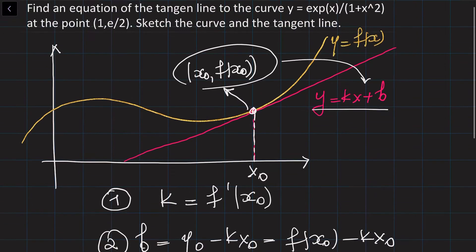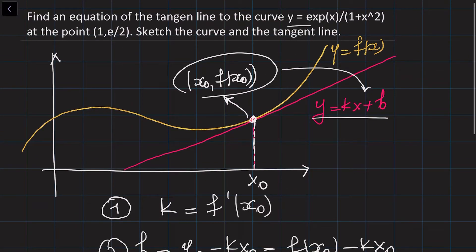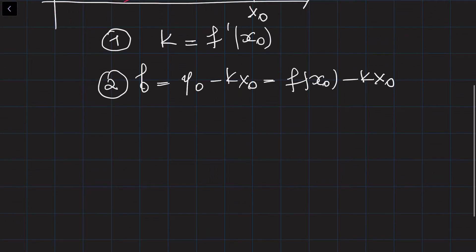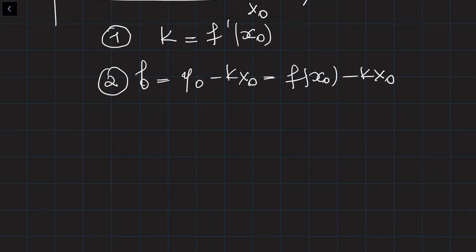So let's do this for the given example. We are given the curve e to the power of x divided by 1 plus x squared. We need to figure out the equation of the tangent line at the point with coordinates (1, e/2). So we first need to take the derivative of this curve, which is e^x divided by 1 plus x squared.